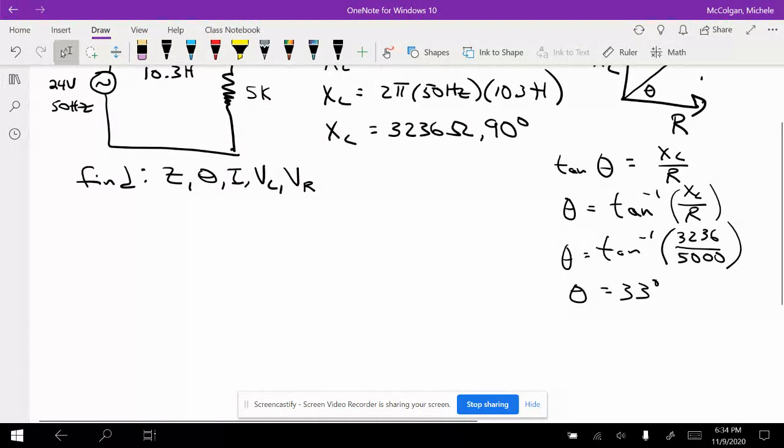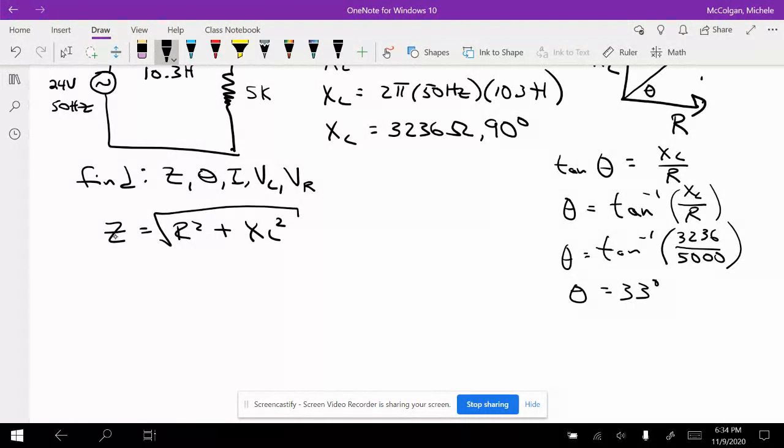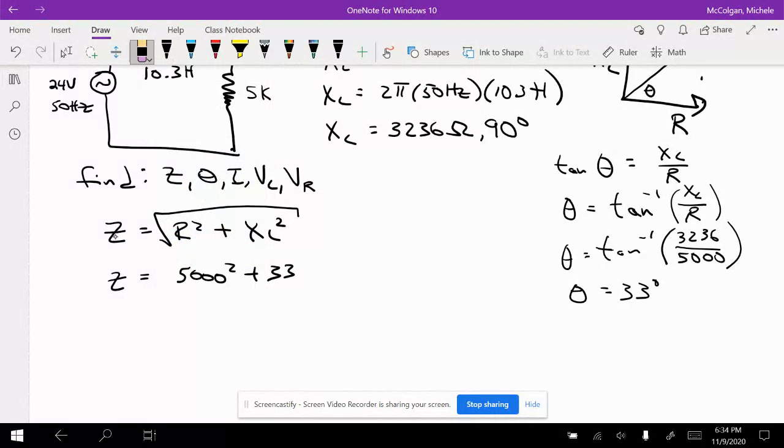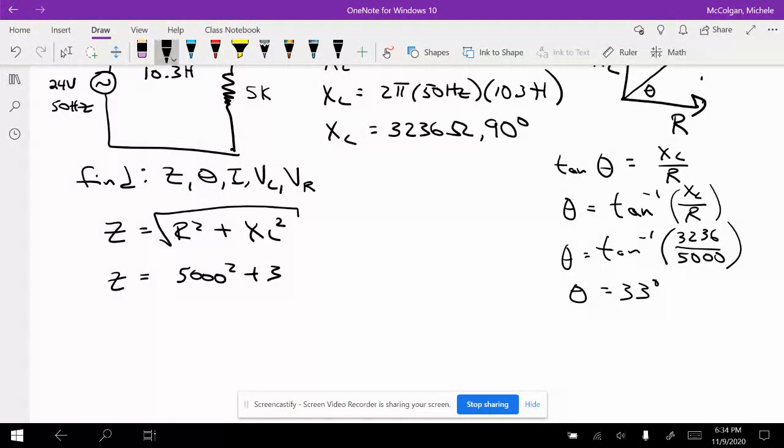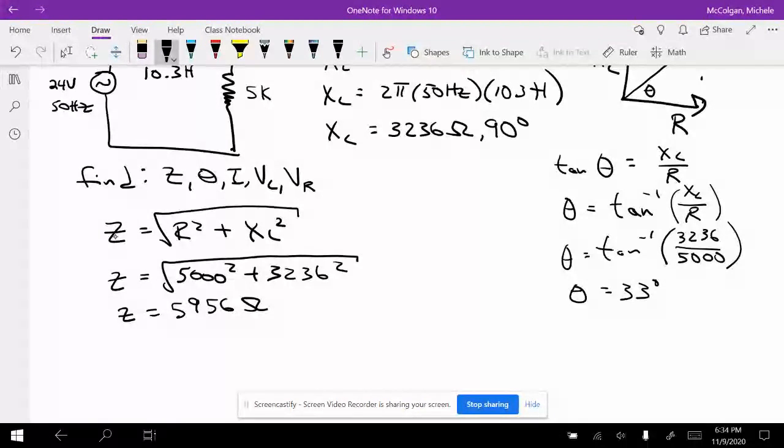So now we're going to find the magnitude of the impedance. Z is equal to square root of R squared plus XL squared, so Z is equal to square root of 5,000 squared plus 3,236 squared. So my Z is equal to 5,956 ohms, and the angle is 33 degrees.